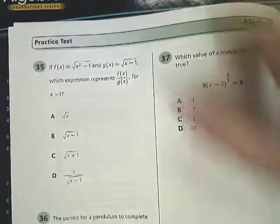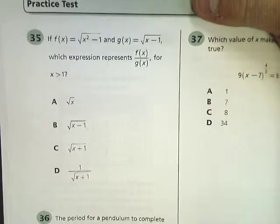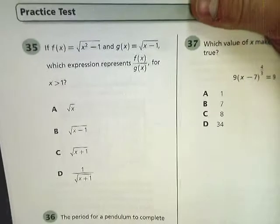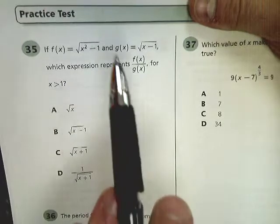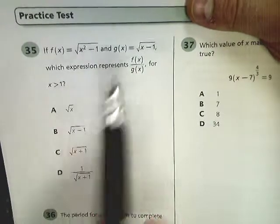Number 35 says f of x is equal to the square root of x squared minus 1, and g of x is the square root of x minus 1. They want to know what expression represents f of x over g of x, where x is greater than 1.